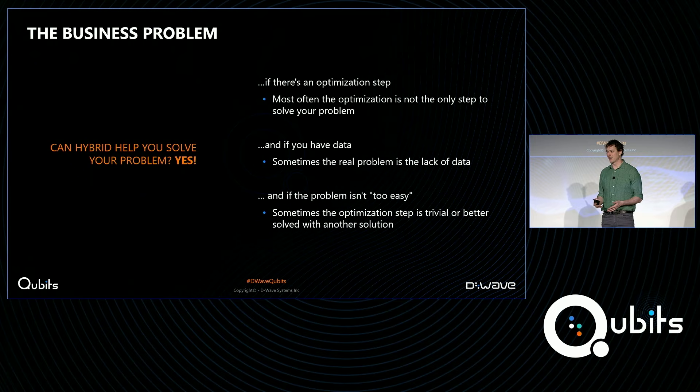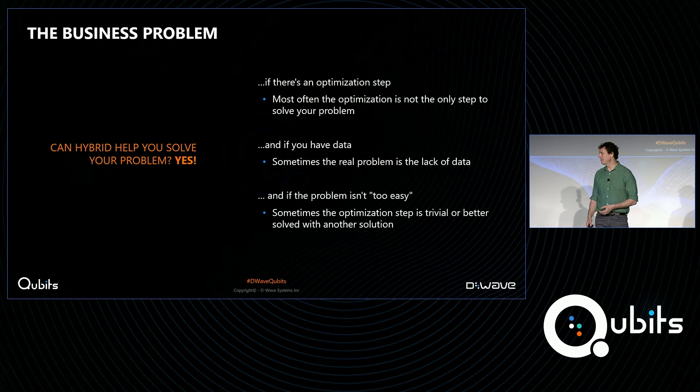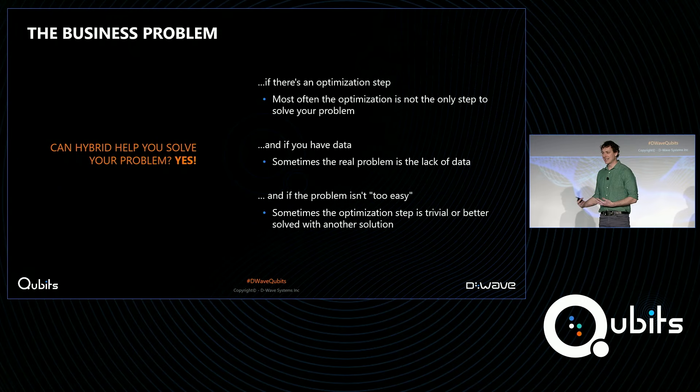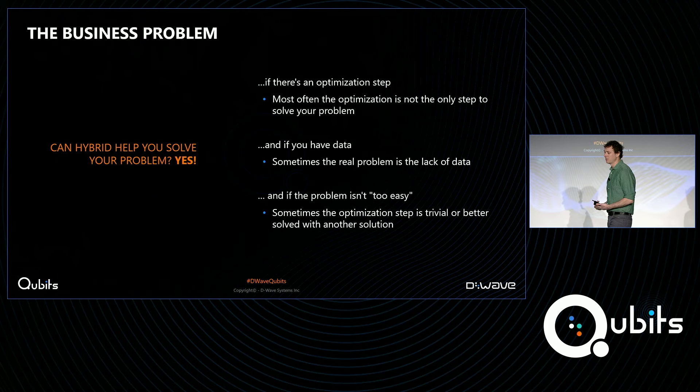The second thing — and this actually is a more common issue — is that you need to have the data. Sometimes when I'm talking to customers, the real problem is that they don't have the data to support their application. For example, someone might say: I want to make my factory run better. And we'll ask where the current bottlenecks are, and they'll say they don't really know. If you have the right telemetry in your factory, we might be able to work on that optimization, but you need to have that data in place. You could work with D-Wave's launch program to help determine what sorts of data you might need, but having that data is something you ultimately need to solve problems.